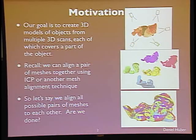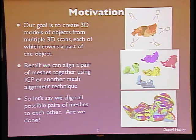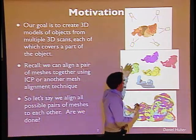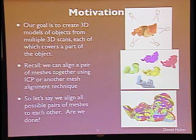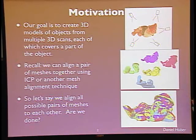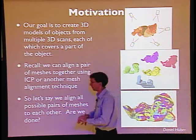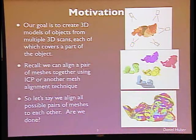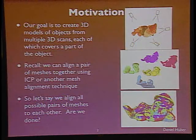Our goal for this lecture is to create 3D models of objects from multiple 3D scans. If you have an object like a gnome, you can imagine using a laser rangefinder that uses time of flight or triangulation, taking multiple shots from multiple viewpoints, getting 3D scans, and then aligning them together. After alignment, you can plop all of them on top of each other and get a complete 3D model.